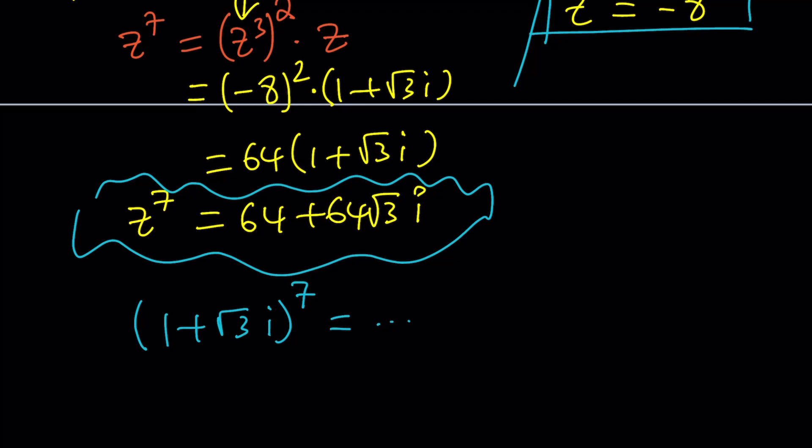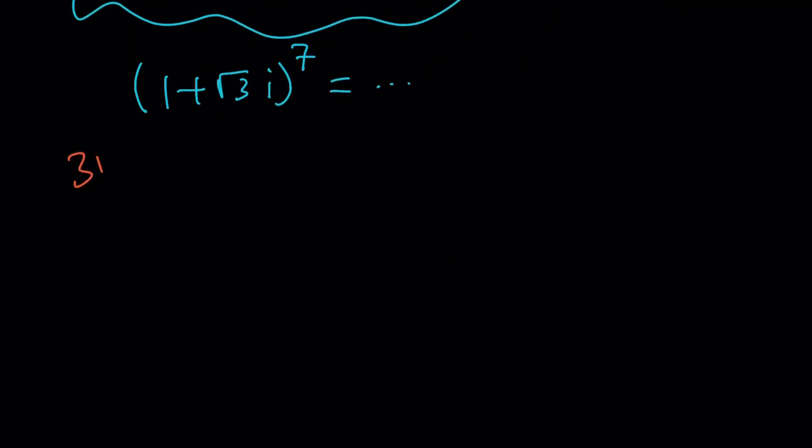But this is the end of the second method. And now let's talk about the coolest, the best, in my opinion, the third method. So the third method, first of all, what is the problem asking for? We have a complex number one plus root three I and raising it to the seventh power.